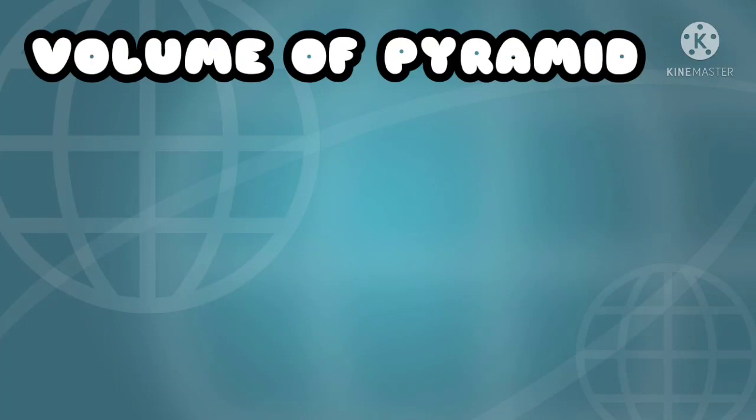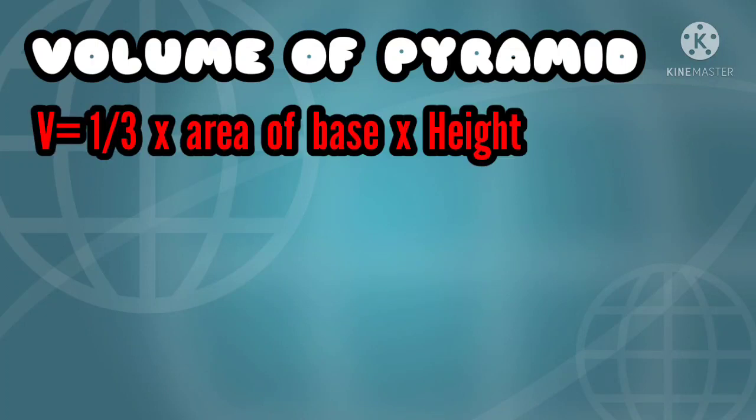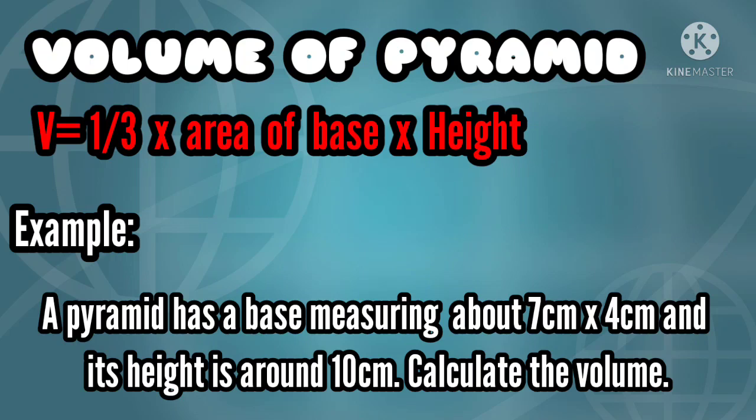Next, we have volume of pyramid. To calculate the volume of a pyramid, we use the formula: volume equals one-third times base times height. Example: a pyramid has a base measuring 7 by 4 centimeters. Its height is around 10 centimeters. Calculate its volume.